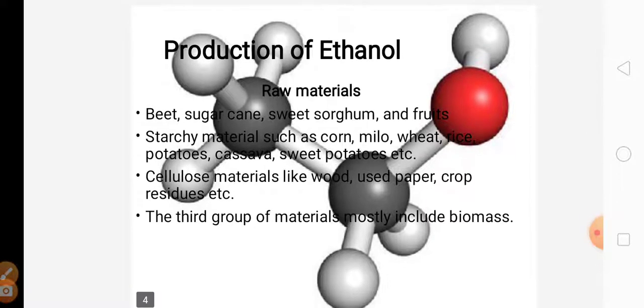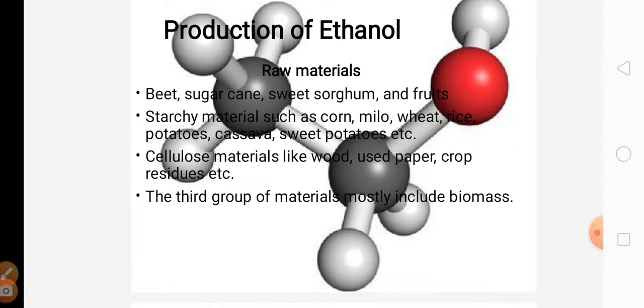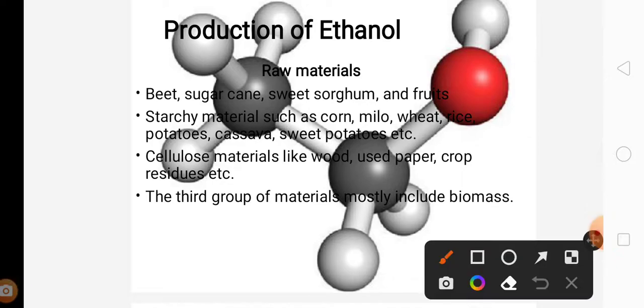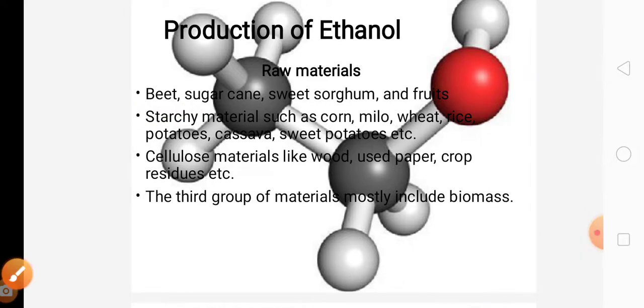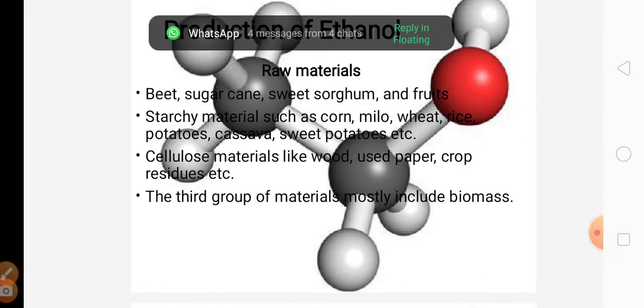Now we come to the production of ethanol. The first thing that we will look into is the raw materials. Beet, sugarcane, sweet sorghum, and fruits are being used as raw materials. In starchy materials, corn, milo, wheat, rice, potatoes, cassava, and sweet potatoes are being used.